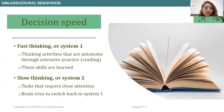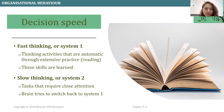To begin with, decision making can at times be very fast and at times very slow. Fast thinking refers to activities that are automatic through extensive practice — these skills are also learned. Whereas slow decision making or thinking requires close attention. The brain tries to switch back to system one as well.